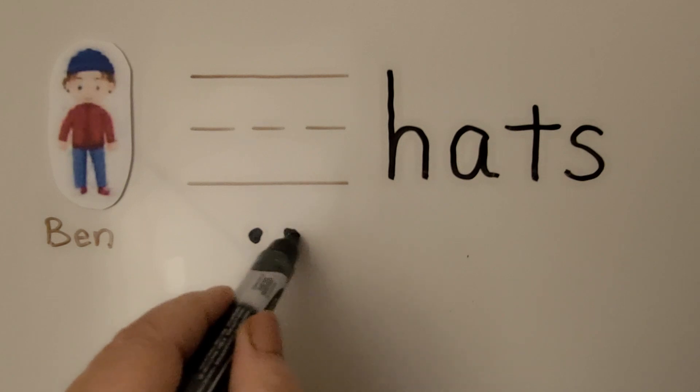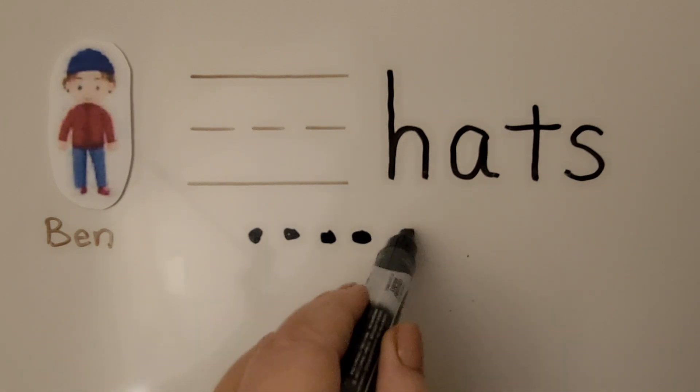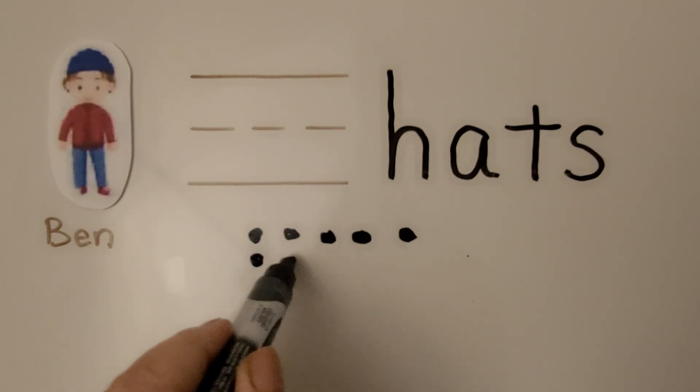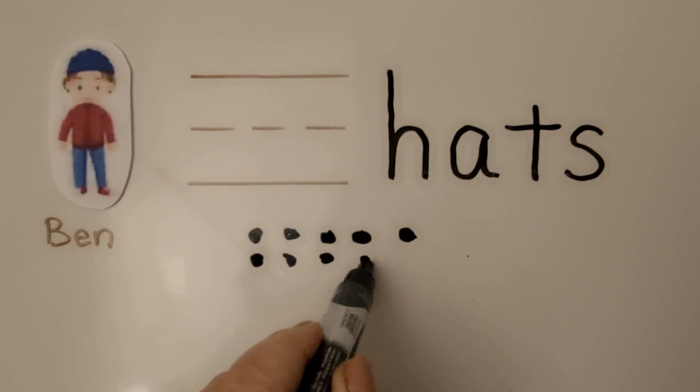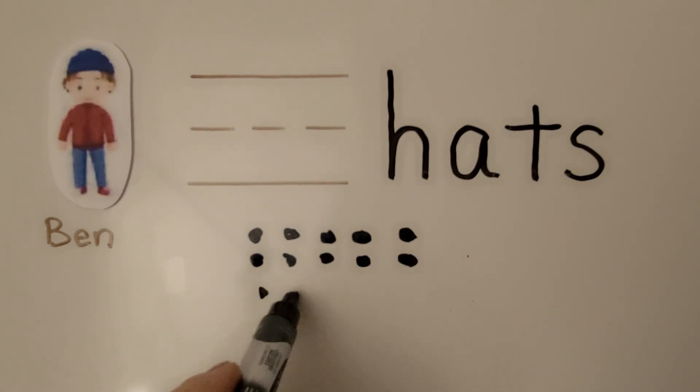We can draw 14 dots for the 14 hats in his closet. Counting 1, 2, 3, 4, 5, 6, 7, 8, 9, 10, 11, 12, 13, 14.